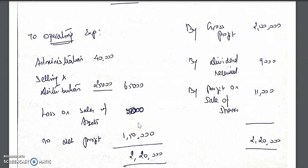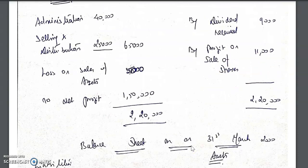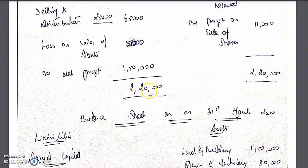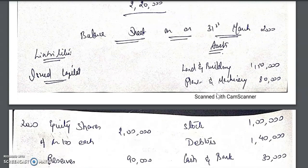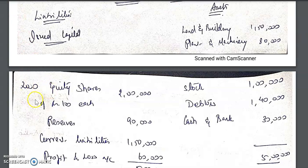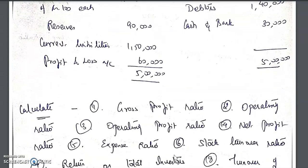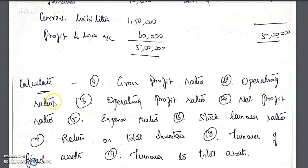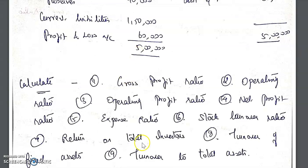Operating expenses given include administration expenses and selling expenses. Non-cash items include loss on sale of assets on the P&L debit side, and dividend received and profit on sale of shares as non-cash income. The balance sheet shows assets and liabilities: 2 lakh equity shares at face value of 100, reserves, current liabilities, and net profit. We are asked to calculate gross profit ratio, operating ratio, operating profit ratio, net profit ratio, expense ratio, stock turnover, return on total resources, fixed asset turnover, and total asset turnover.